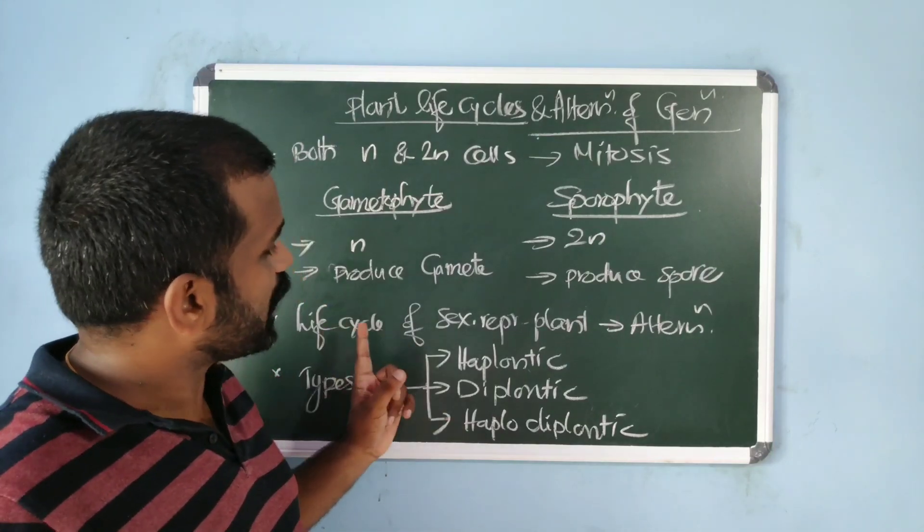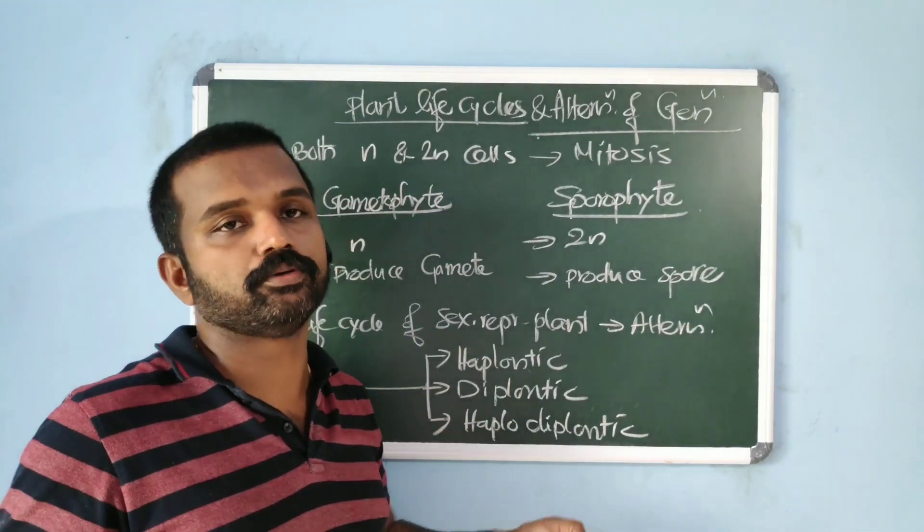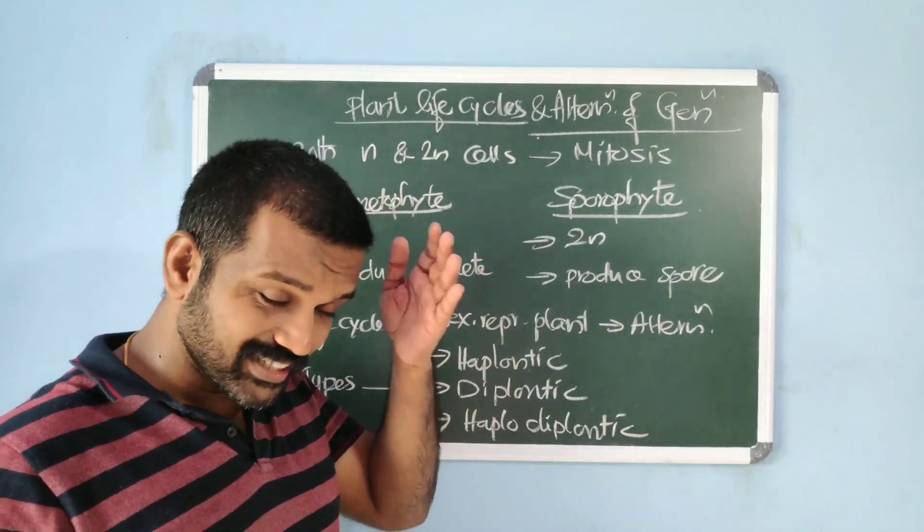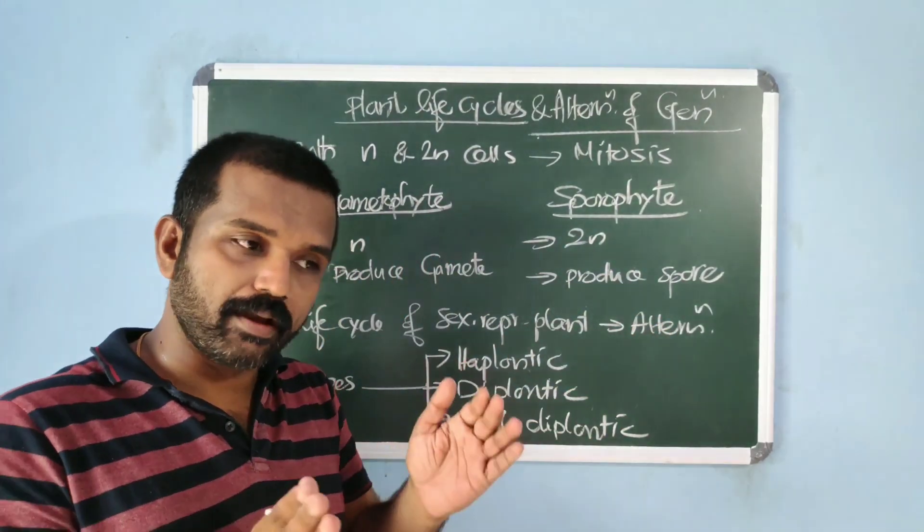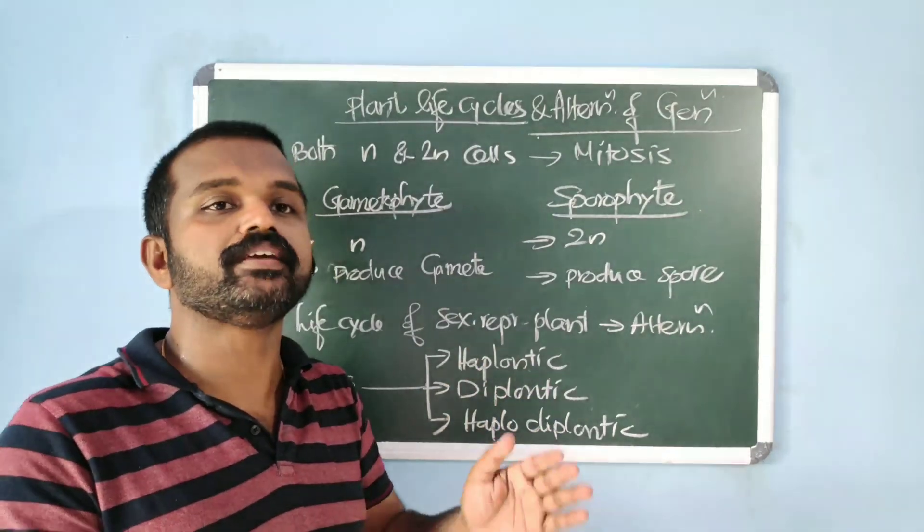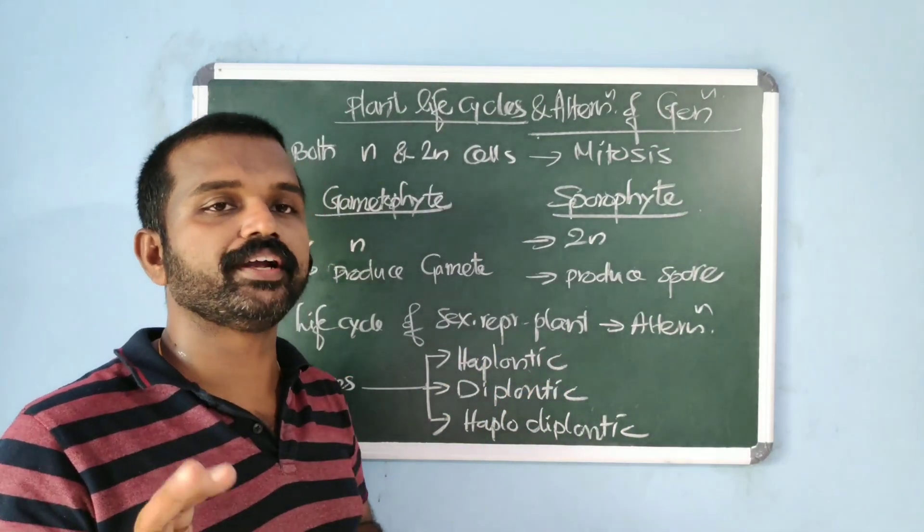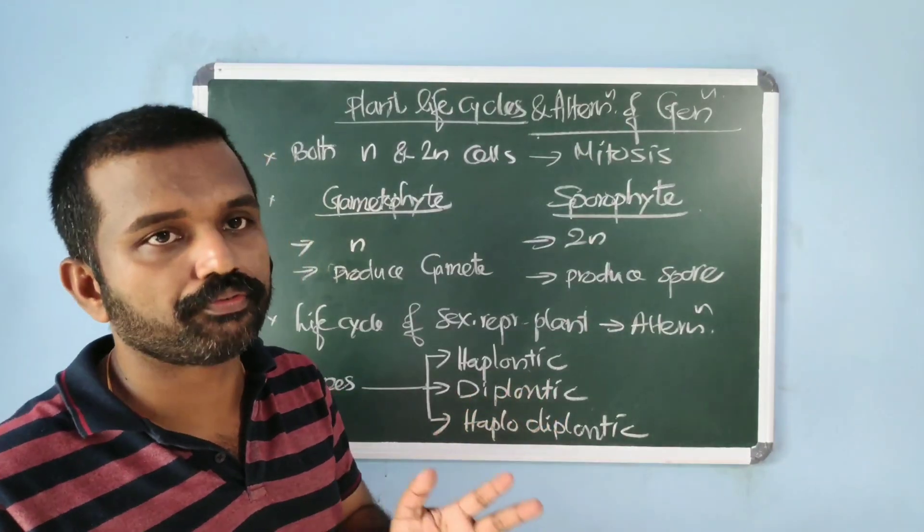During the life cycle of any sexually reproducing plant, there is an alternation of generation between a haploid gamete producing gametophyte and a diploid spore producing sporophyte.